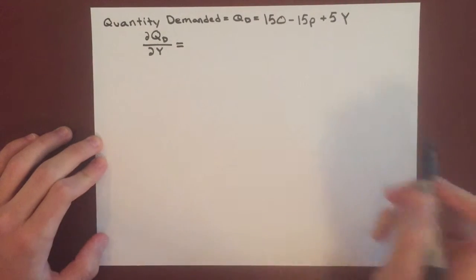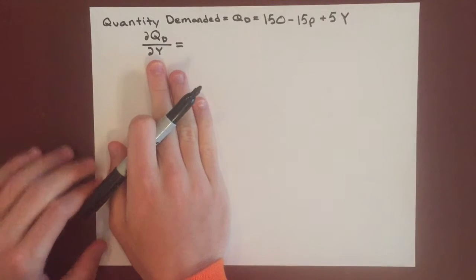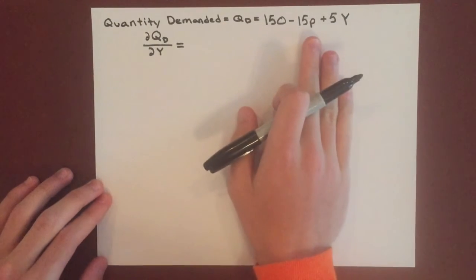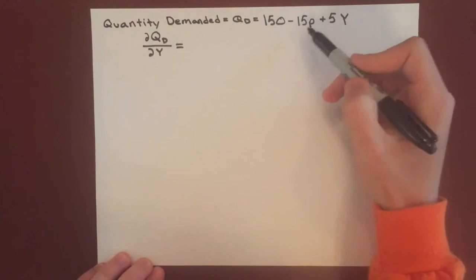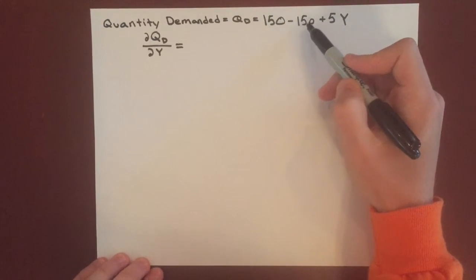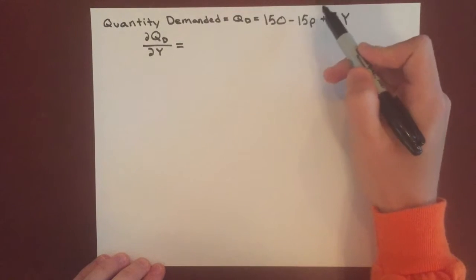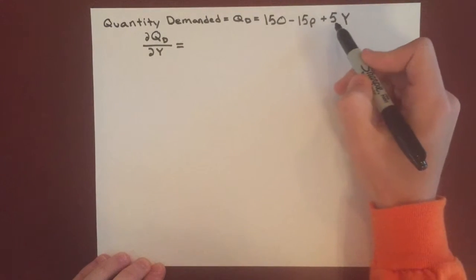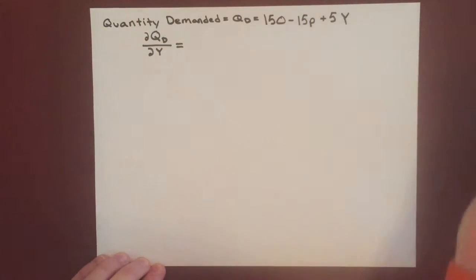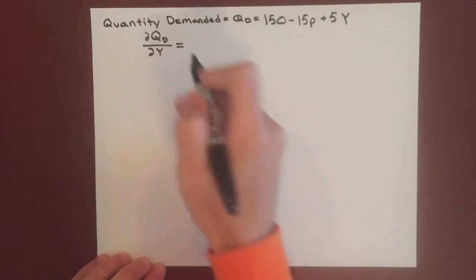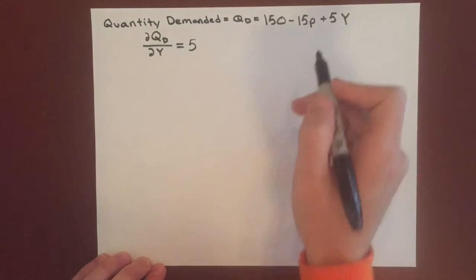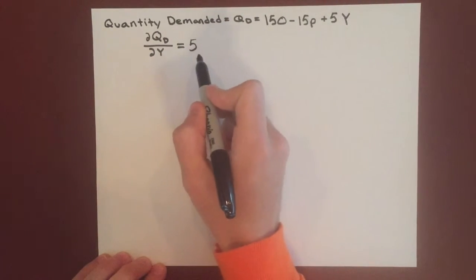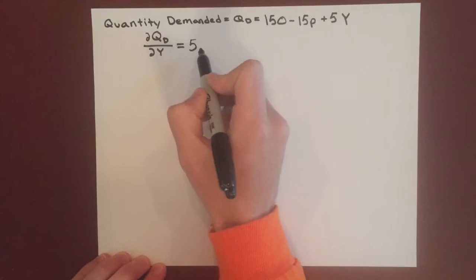And when you're doing this with respect to income, you take all the other variables as constants. So the derivative of 150 is 0, derivative of negative 15 times p is just a constant so that'll be 0, and then you have derivative of 5Y which with respect to Y is going to be 5. So if income increases slightly, then the quantity demanded will increase by 5.